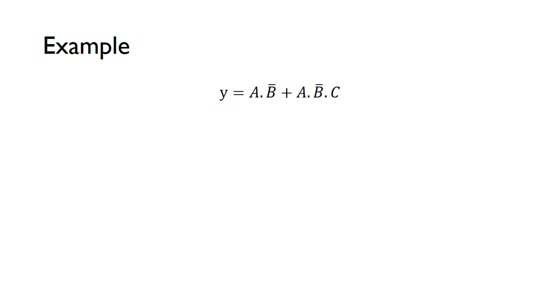We're going to look at an example, just a random Boolean expression. Here you go, using those rules we've just seen. To simplify this, we can note that A is a common factor, so you can take out the common factor, and we'll be left with this expression.